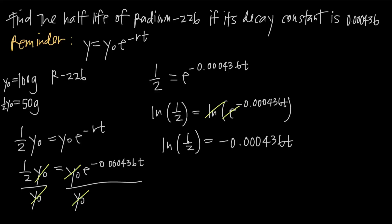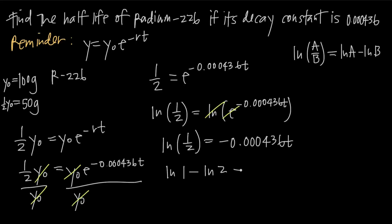To simplify the left-hand side, we use the law of logarithms: the natural log of a divided by b equals the natural log of a minus the natural log of b. So natural log of one-half — which is natural log of 1 divided by 2 — equals natural log of 1 minus natural log of 2. Since the natural log of 1 is 0, that term disappears, leaving us with negative natural log of 2 equals negative 0.000436 times t.